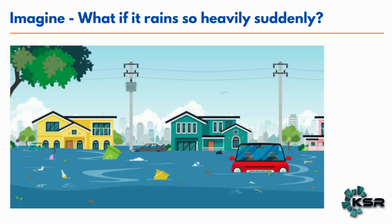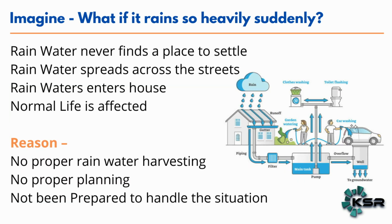Imagine if there is a sudden rain happening across your city. If it was not planned for or you are not prepared for it, rainwater can enter into different places. It does not have a place to settle, so it spreads across the streets. It can even enter your house and normal life gets affected. This happens because there is no proper planning in terms of rainwater harvesting — you were simply not prepared for it.